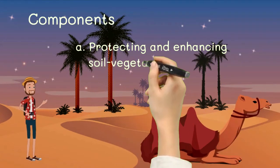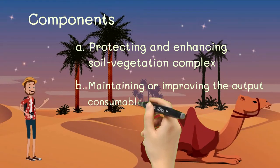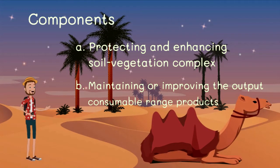In range management, there are two components: protecting and enhancing the soil and vegetation complex, and maintaining or improving the output of consumable range products such as red meat, fiber, wood, water, and wildlife. By achieving these two components, you are on the right track of having the full potential of your rangeland in a sustainable manner.